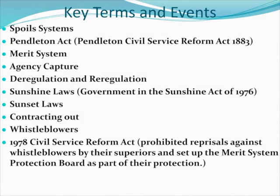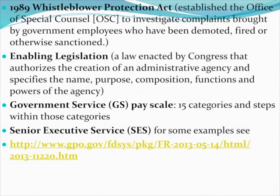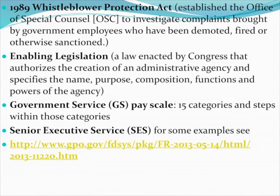Whistleblowers are people who report illegal or unethical activities within their organizations. In 1978 the Civil Service Reform Act was passed to protect whistleblowers, and in 1989 it was strengthened with the Whistleblower Protection Act. However, despite these legal protections on paper, 40% of whistleblowers lose the position they held within one year of blowing the whistle. So while federal employees are rarely fired, becoming a whistleblower drastically increases your chance of being fired.